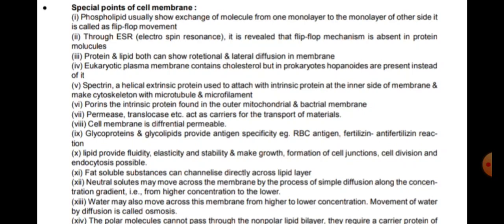Glycoproteins and glycolipids provide antigen specificity — for example, RBC antigens and fertilizing/anti-fertilizing reactions between gametes. Lipids provide fluidity, elasticity, and stability, and make growth, formation of cell junctions, cell division, and endocytosis possible. Fat-soluble substances can pass directly across the lipid layer.